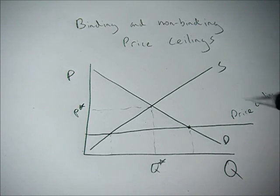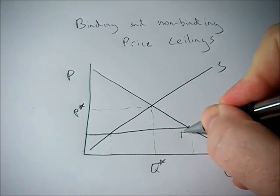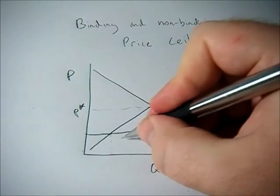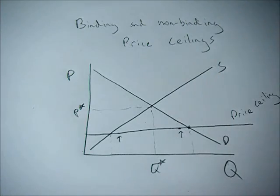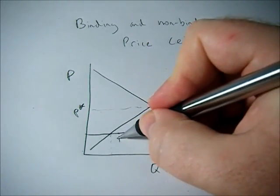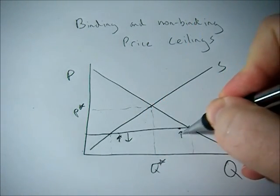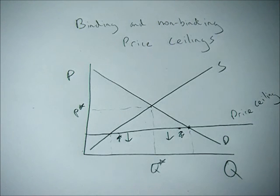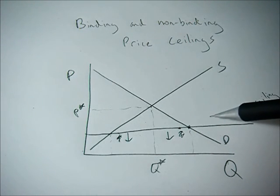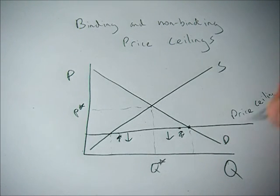But with the price ceiling, the price tries to go up and it hits the ceiling, so it can't go any further. So anything below the ceiling is allowed, nothing above the ceiling is allowed. So this is a binding price ceiling if it occurs below the equilibrium point.